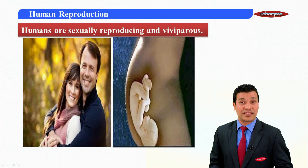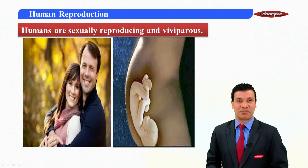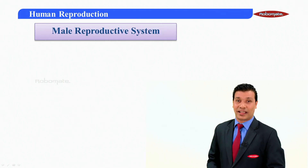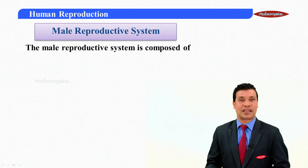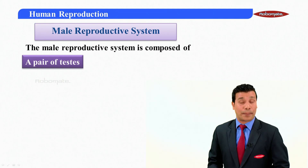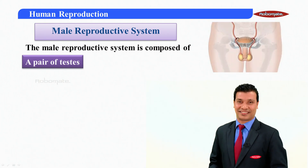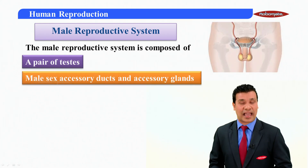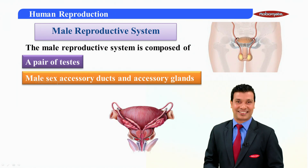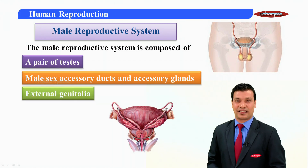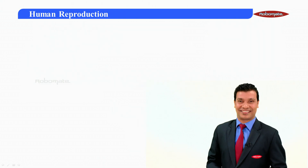Humans are sexually reproducing and viviparous. The male reproductive system is composed of a pair of testes, male sex accessory ducts, and the accessory glands, and the external genitalia.